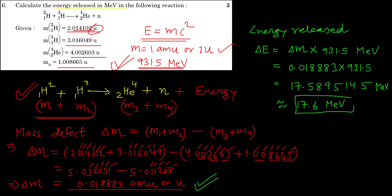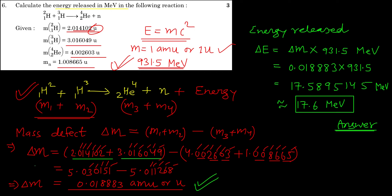So the energy released in this reaction is approximately 17.6 MeV. This is your answer. I hope you understood — this question looks a little difficult, but the key thing to keep in mind is that you must not ignore any digit given in the question; consider all digits right till the last step. Thank you very much, take care and bye bye.